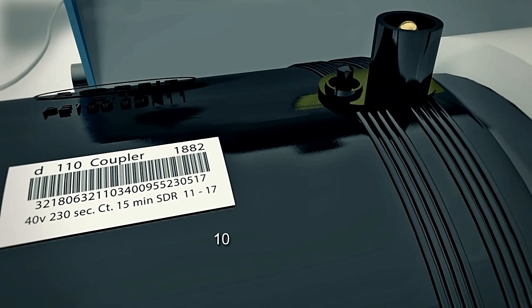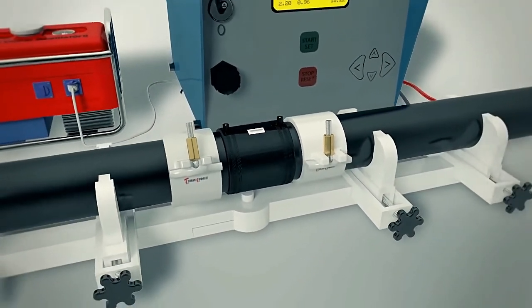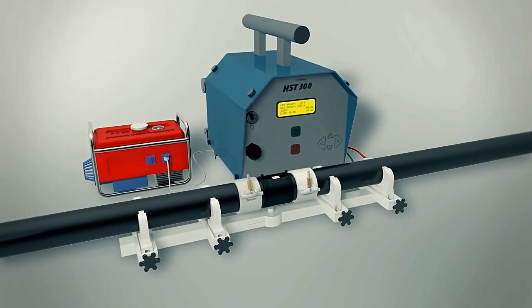When fusion is complete, mark the dismantling time on fitting. This is equal to the present time of day plus the cooling time. Since pressure testing requires low temperatures in the joint, we recommend waiting four times the cooling time after fusion before beginning pressure testing.